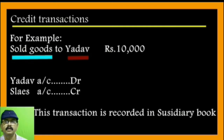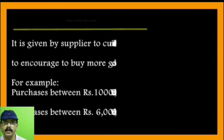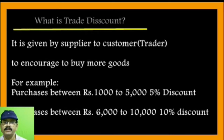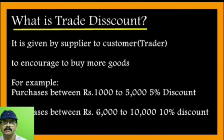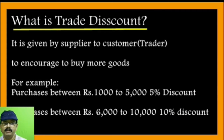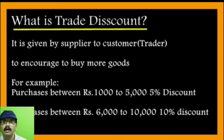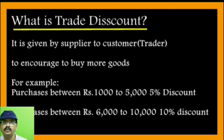Next, one special point: what is trade discount? It is given by the supplier to the customer — the customer may also be a trader — to encourage buying more goods. For example, purchases between 1,000 to 5,000 get a 5% discount, and purchases between 6,000 to 10,000 get a 10% discount offered by the supplier.